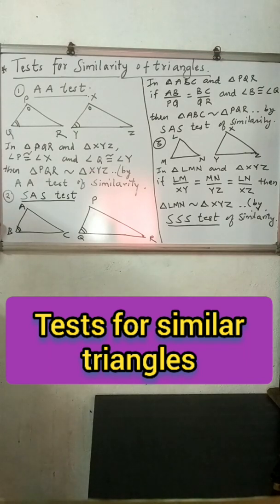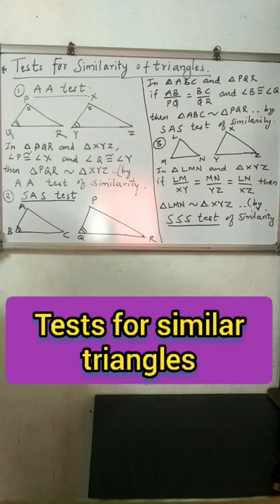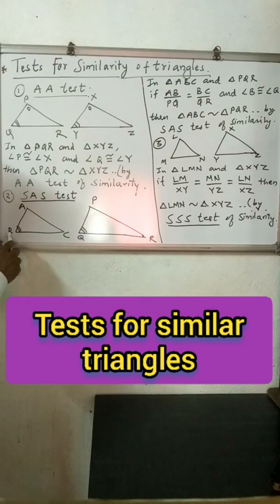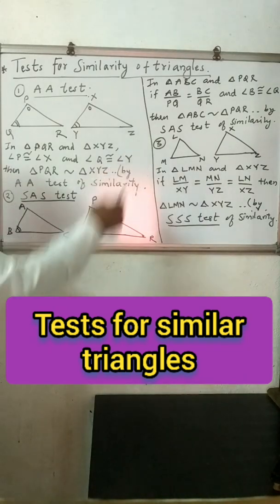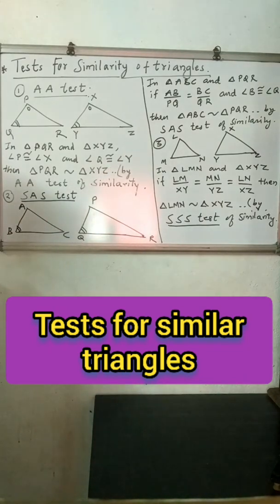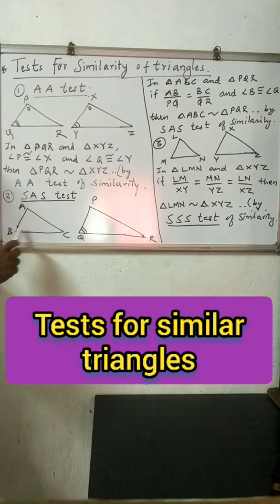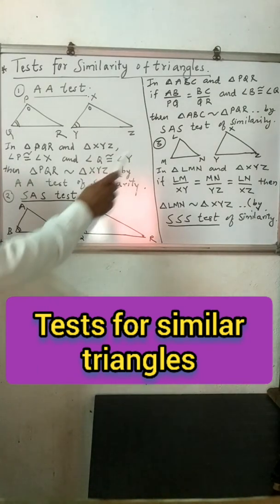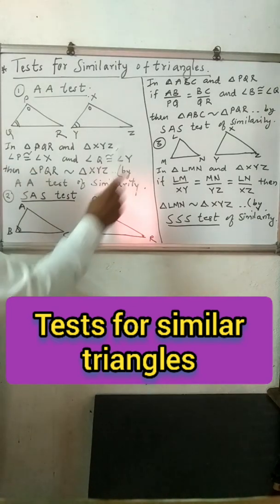Second test of similarity is Side-Angle-Side (SAS). For 1-to-1 correspondence, if in triangle ABC and triangle PQR, the pairs of corresponding sides AB upon PQ equals BC upon QR, and the included angle B is congruent to corresponding angle Q, then these two triangles are similar by the Side-Angle-Side test of similarity.